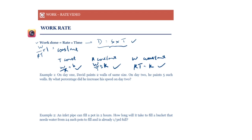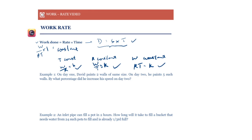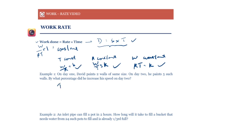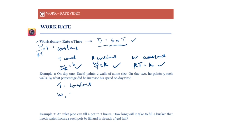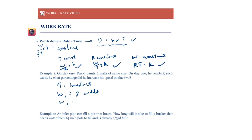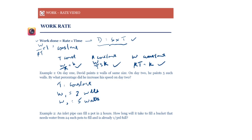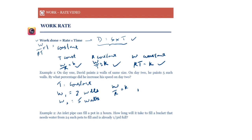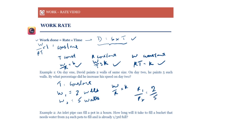Let's look at an example. On day one, David paints two walls of the same size; on day two, he paints five such walls. In each case he takes one day, so time is constant. The work done on day one is two walls and on day two is five walls, so the ratio of work is 2:5. Since time is constant, work varies directly with rate, so the ratio of rates r1 to r2 is also 2:5.